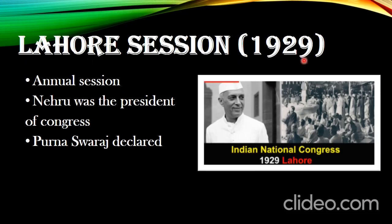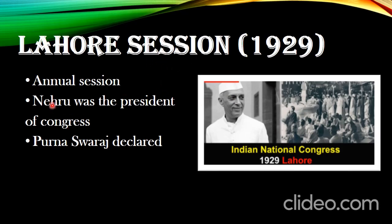The next event is the Lahore Session, which happened in the year 1929. Every year, the Congress has a session and it will choose one place where the session will happen. A lot of ideas and discussions would be made in that session, so it is an annual session.